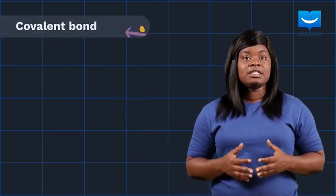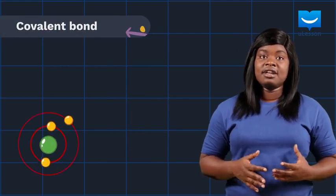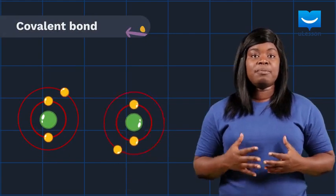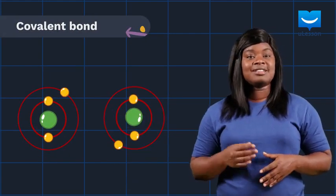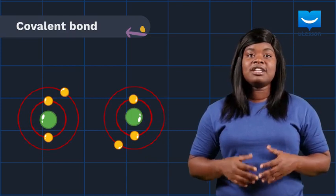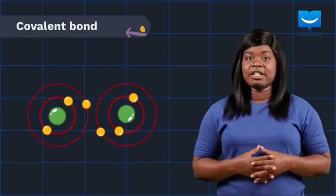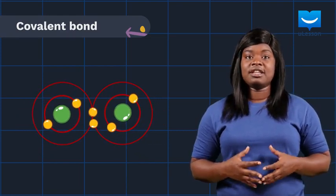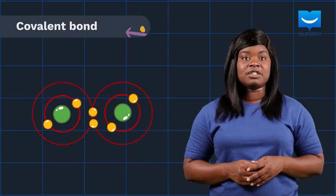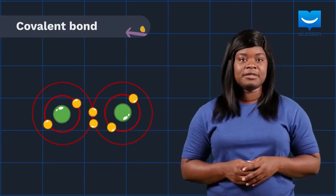Covalent bond, on the other hand, is a type of bond formed when the same or different atoms combine to share the electrons in their outermost shell. In subsequent lessons, we will learn examples of atoms that participate in the formation of ionic and covalent bonds.